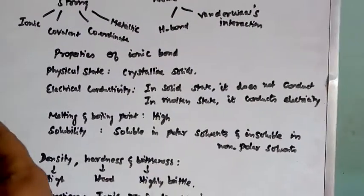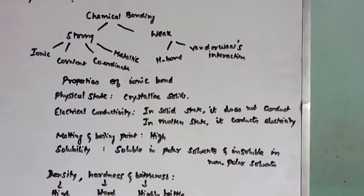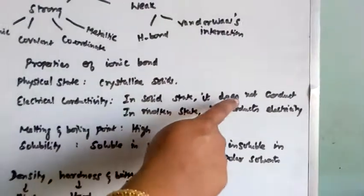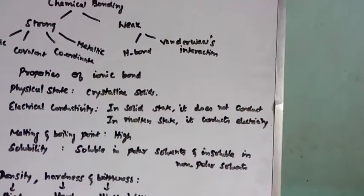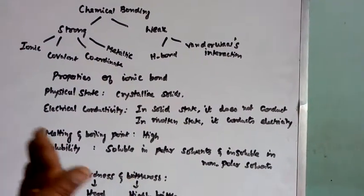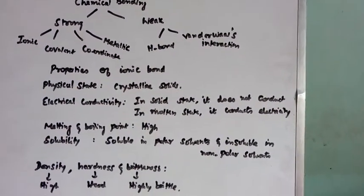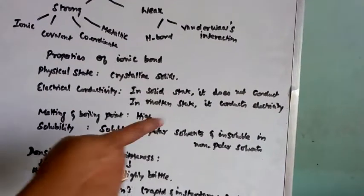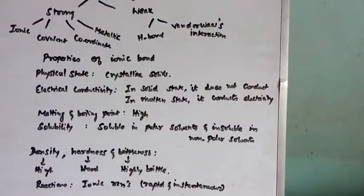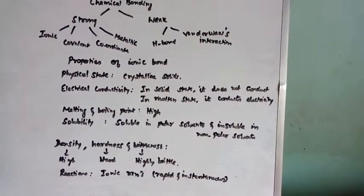Here, the ions are tightly packed. So that is why it doesn't possess free ions. In solid state, it doesn't conduct electricity. Whereas, in molten state, when it is dissolved in water, the ions are free to move so that it will conduct electricity. Is this clear?